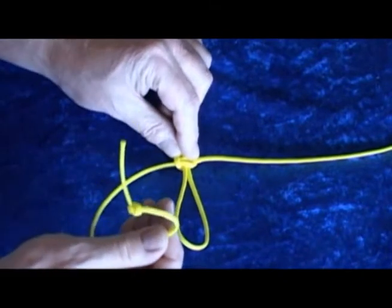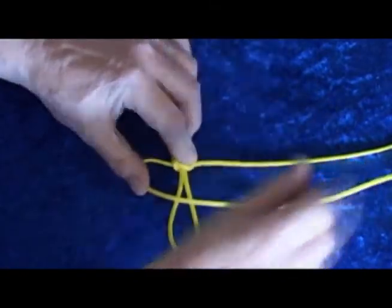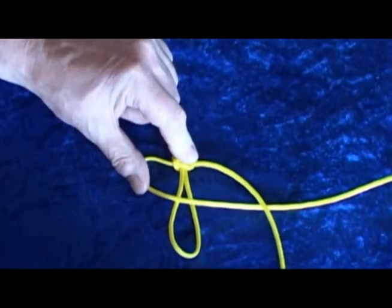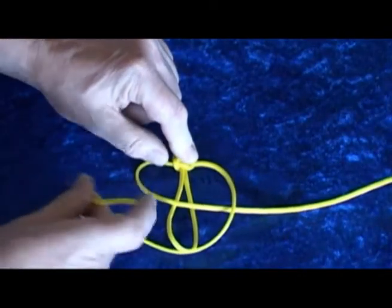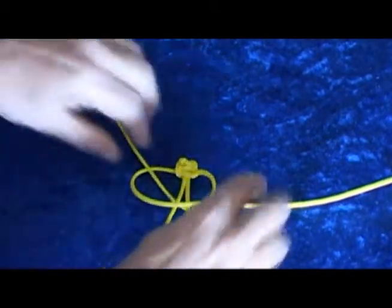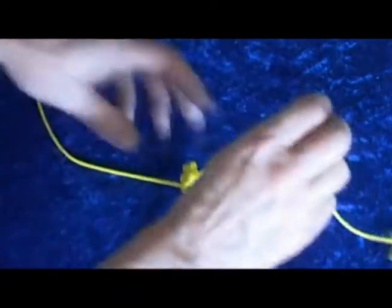And again, the knotted end over the tail. The other end down over the knotted part, behind the tail and up through the loop at the other end.